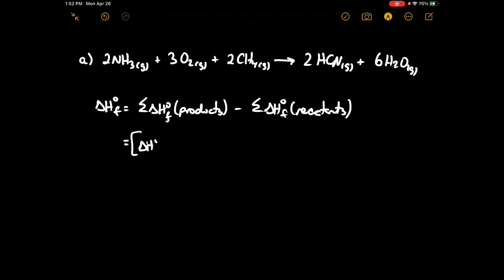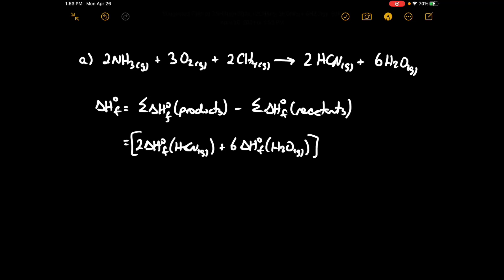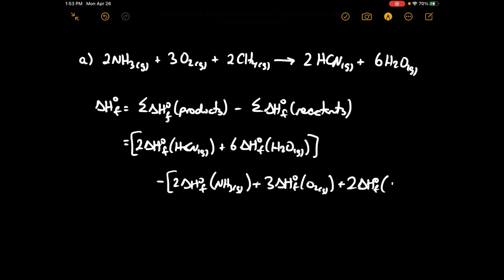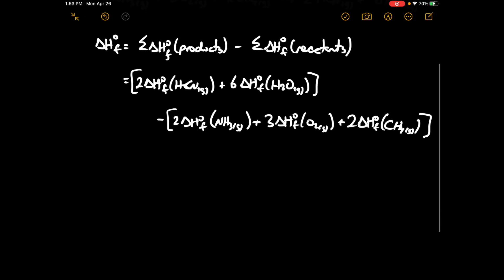This will be equal to: starting from the products, 2 delta H°f for HCN gas plus 6 delta H°f for H₂O gas, minus 2 delta H°f for NH₃ gas plus 3 delta H°f for O₂ gas plus 2 delta H°f for CH₄ gas. We'll look at these values from Appendix 4.